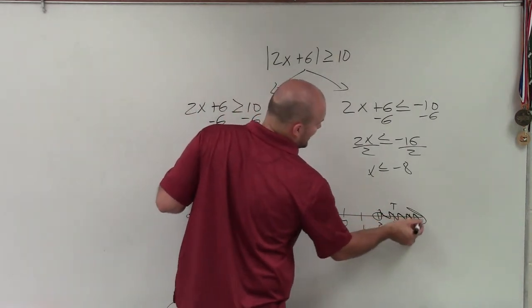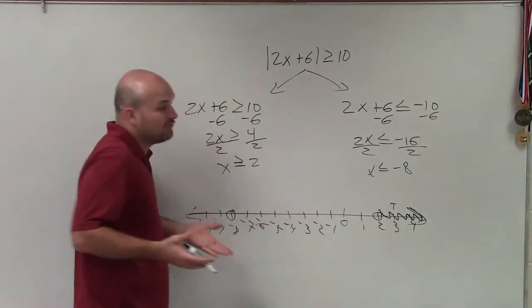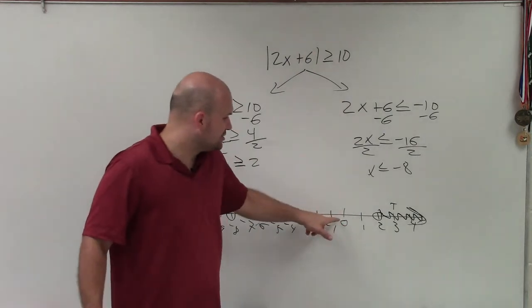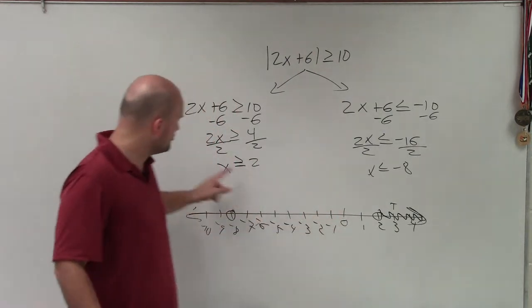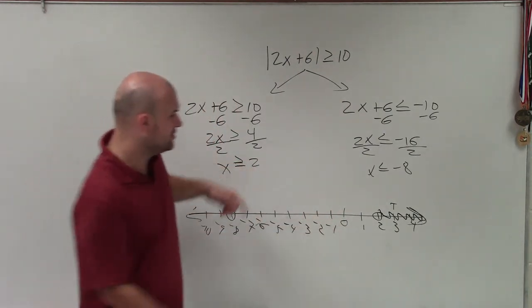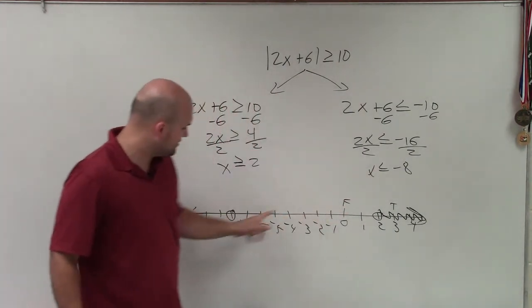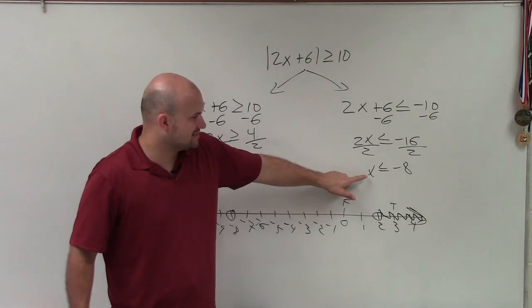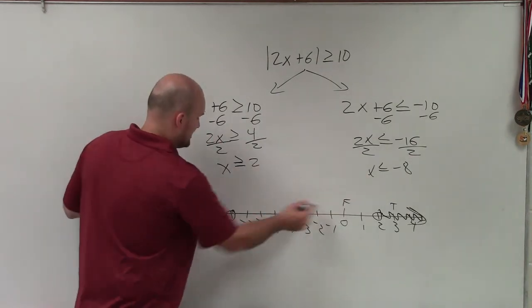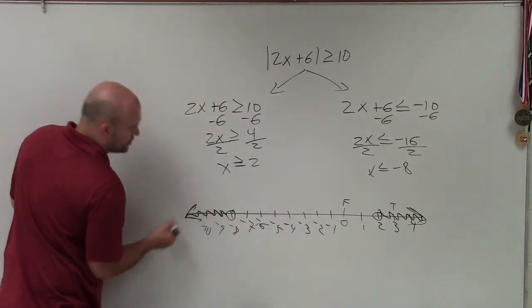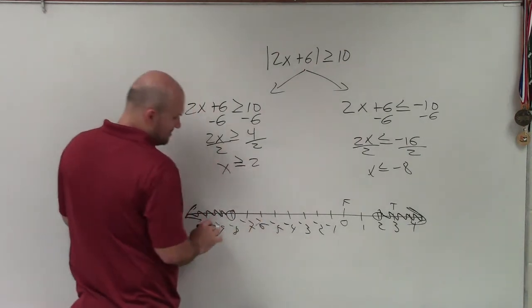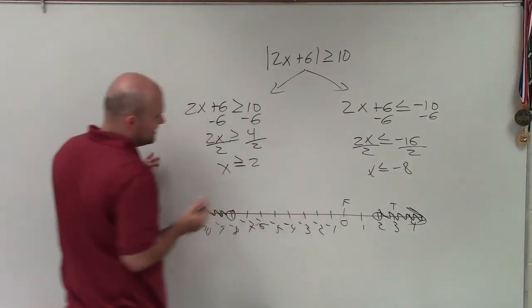So therefore, you shade towards the true. And it's always helpful to always double check, make sure to the left it's going to still be false. So plug 0. Is 0 greater or equal to 2? No, that's false. All right, now let's try 0 in for this equation for negative 8. Is 0 less than or equal to negative 8? No, that's false again. So therefore, I'm going to shade towards the true. And let's try it. Is negative 9 less than or equal to negative 8? Yes, it is.